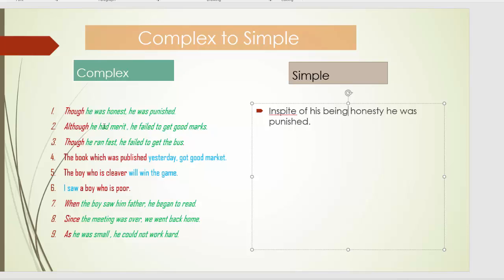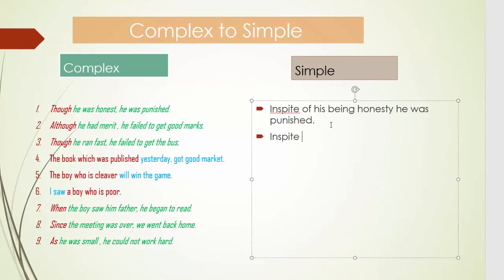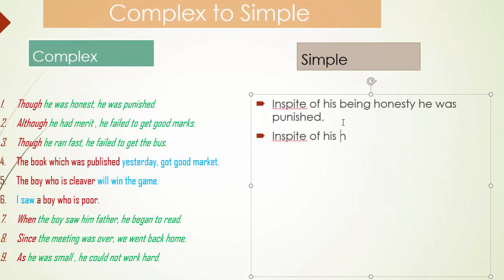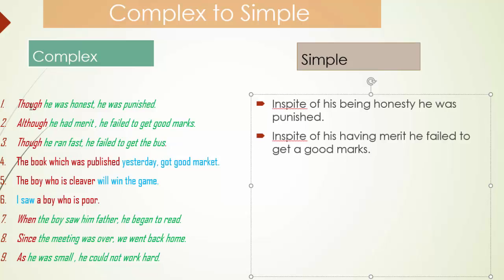If we see 'was' or 'were', then we have to replace it with 'being'. If we see 'had' or 'has', we have to replace it with 'having'. So: 'In spite of his having merit' — because there was 'had' in the complex sentence — 'he failed to get good marks.' This is the rule in the case of 'though' and 'although'.